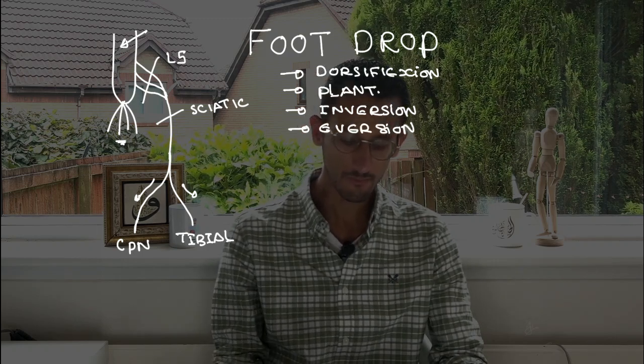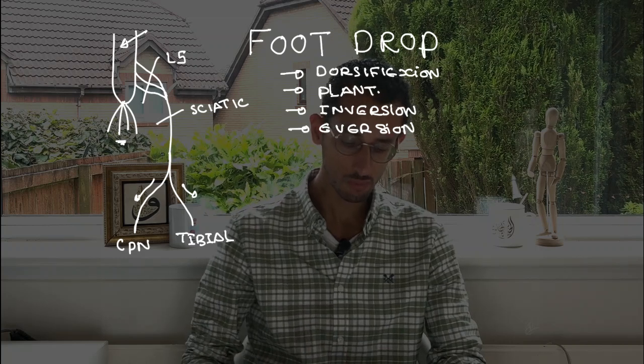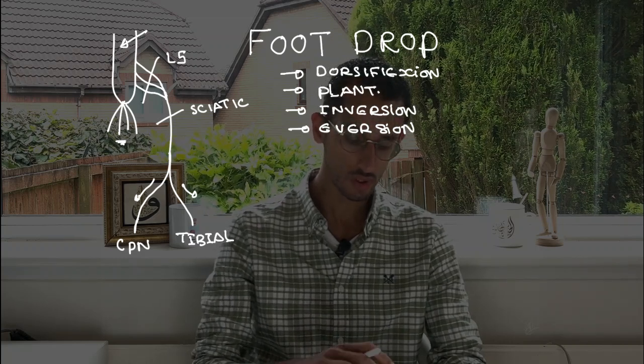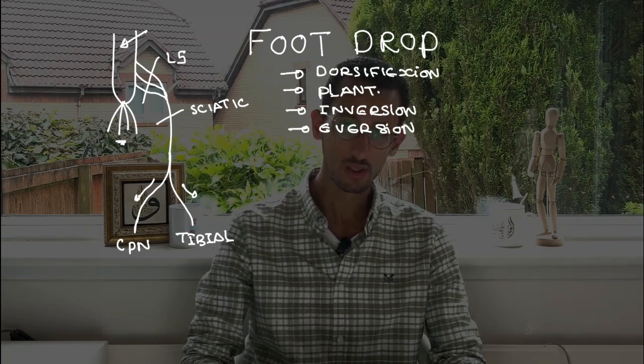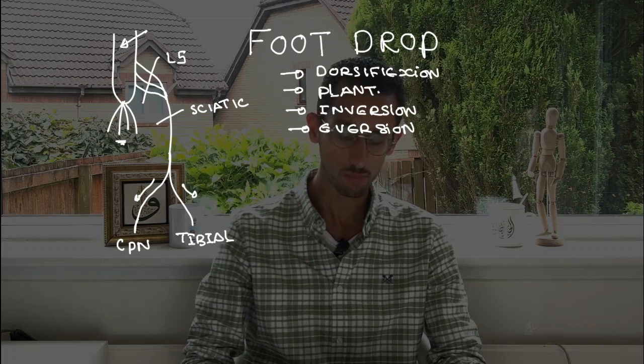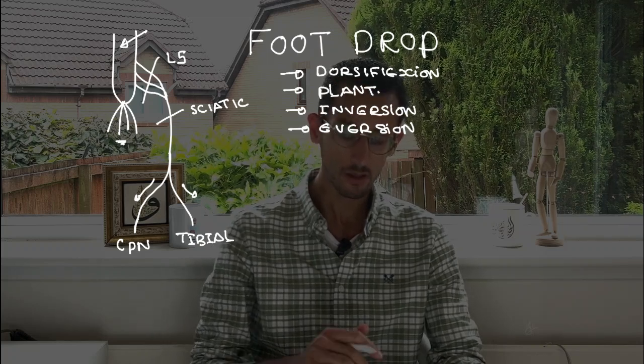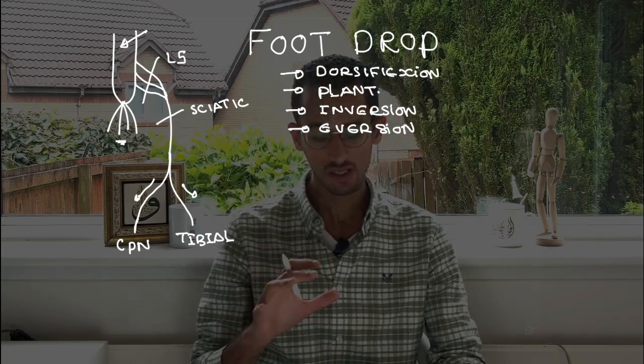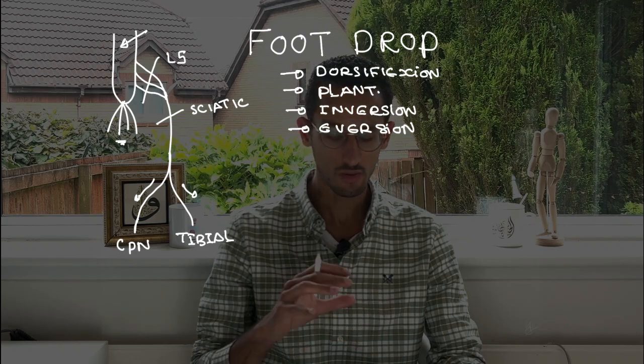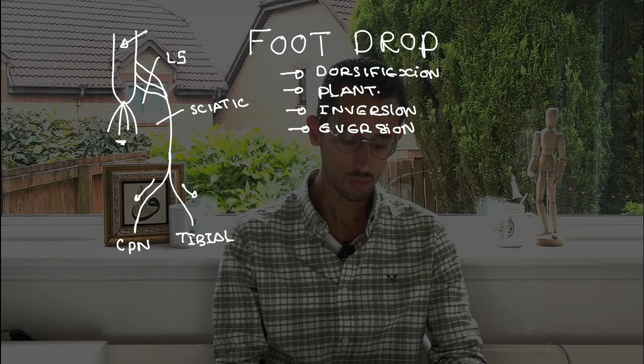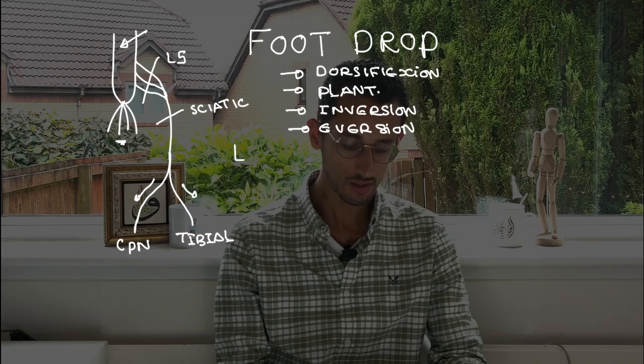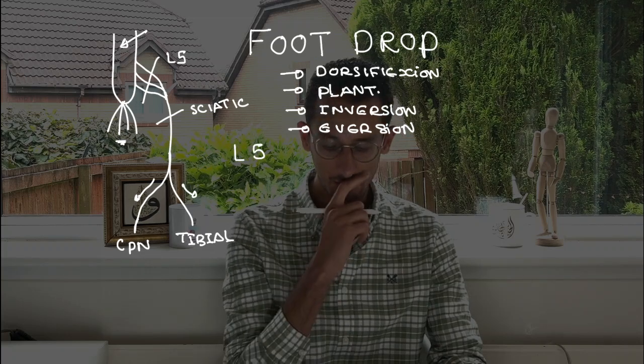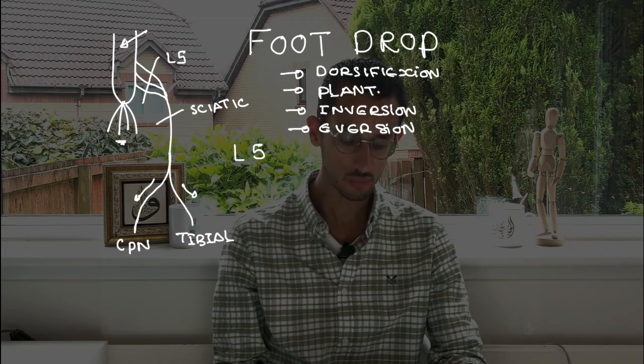Okay, so for the foot to do all of these movements, it will rely on those nerve roots - L5 or the main nerves: the sciatic, common peroneal nerve, or the tibial nerve. For you to remember, there's an easy way to remember that so you don't get confused about the function of each one.